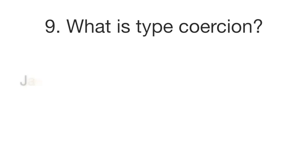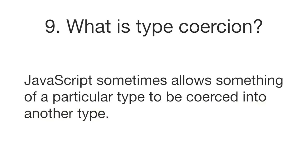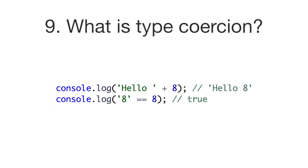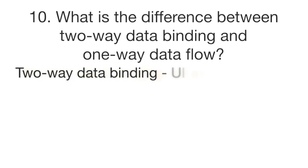Question number nine: what is type coercion? JavaScript sometimes allows something of a particular type to be coerced into another type. In the first example the 8 is a number but it is coerced into a string, so there is no type error. In the second example the double equals sign allows two 8s — one a string and one a number — to be counted as equal by coercing the types to be the same.